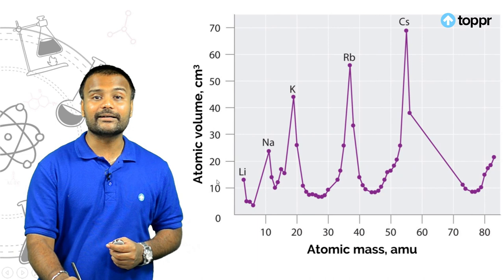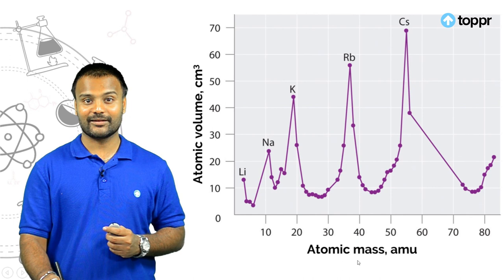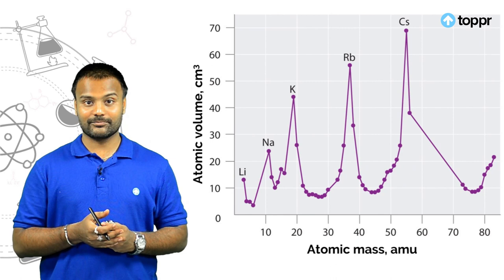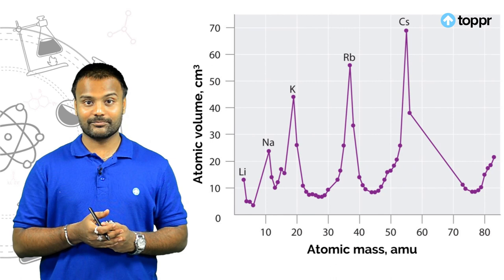For example, alkali metals occupy the peaks of the atomic volume curve, which means they have the largest atomic volume. Similarly, alkaline earth metals occupy the midpoints on the descending portions of the curve.